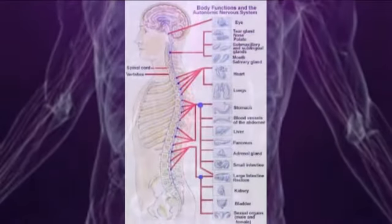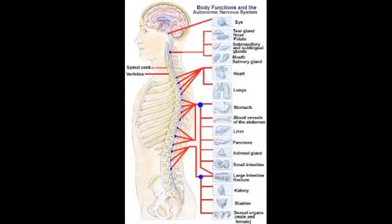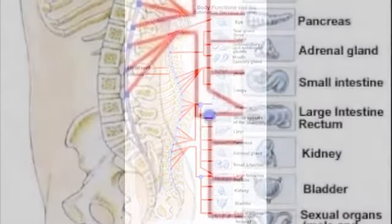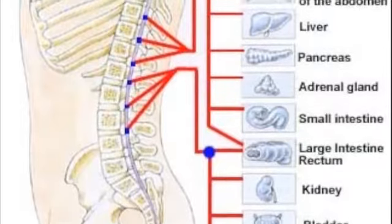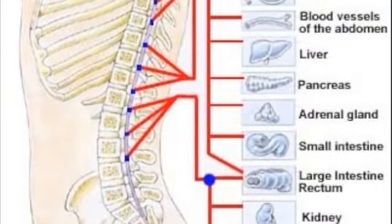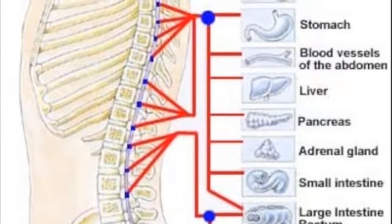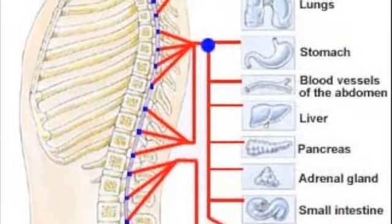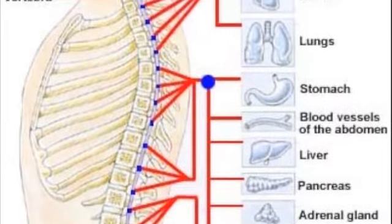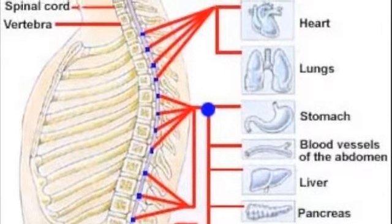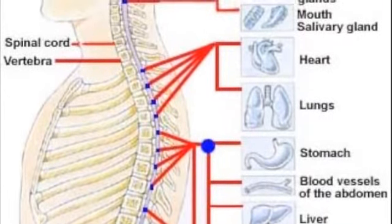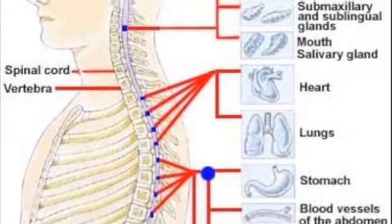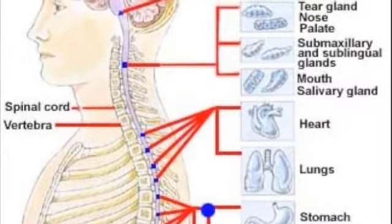We can see in this diagram from Western medicine how five nerve centers comprise the autonomic, or unconsciously functioning, nervous system, which controls the functions of our organs without our needing to think about them. The lowest controls the gonads, bladder, kidney, and rectum. The second controls the large and small intestines, adrenal gland, pancreas, liver, abdominal blood vessels, and stomach. The third controls the heart and lungs. The fourth controls the tear gland, nose palate, submaxillary and sublingual glands, and the mouth salivary gland. The fifth controls the eyes.